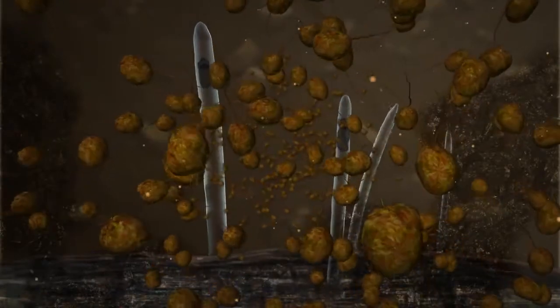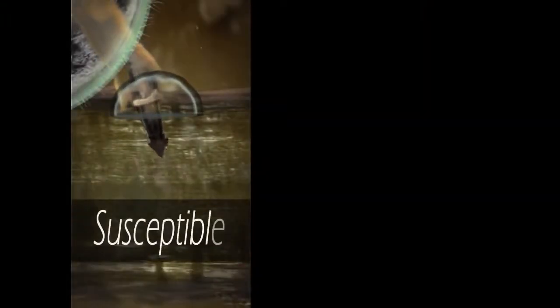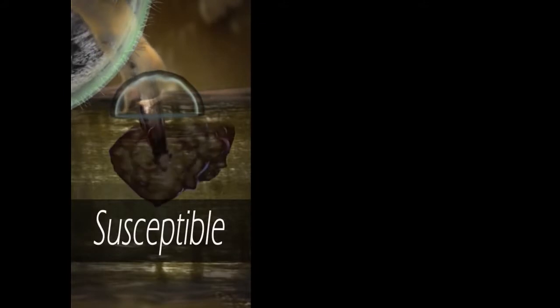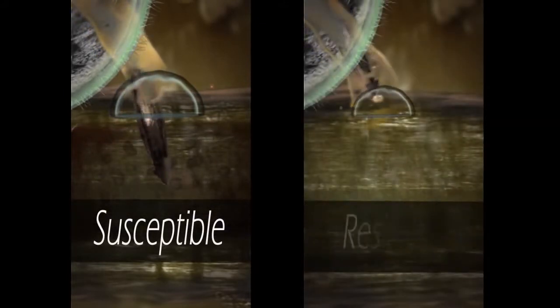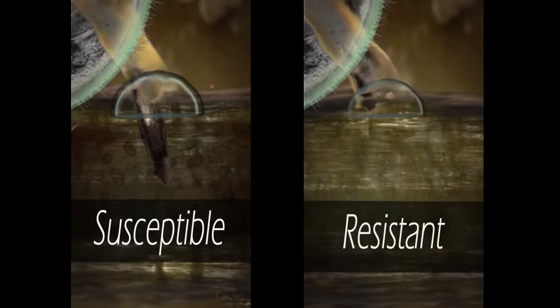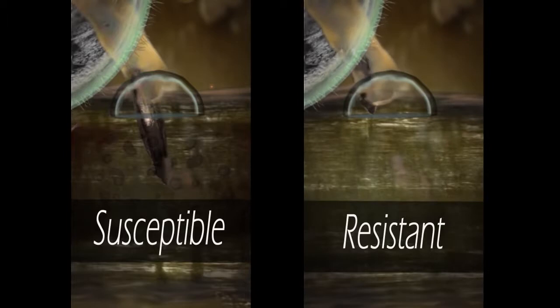This is the stage where clubroot resistance operates. The root hairs of both susceptible and resistant plants are infected by the primary zoospores, but the flush of these secondary zoospores from the root hairs are not able to infect and develop into the root of resistant plants. That is why clubroot does not develop in resistant plants.